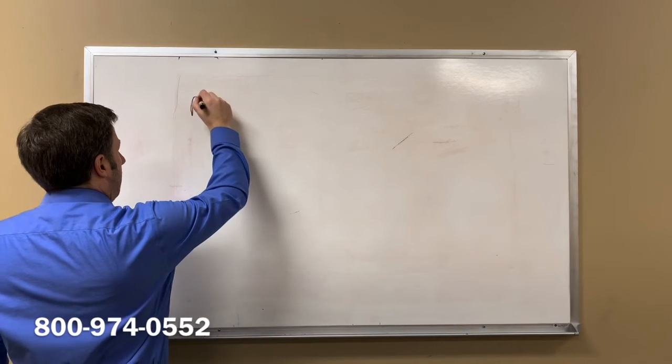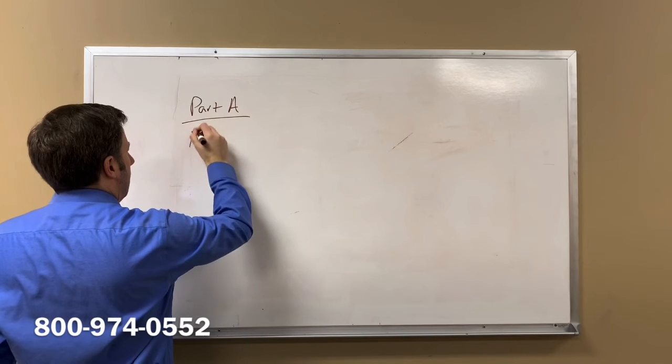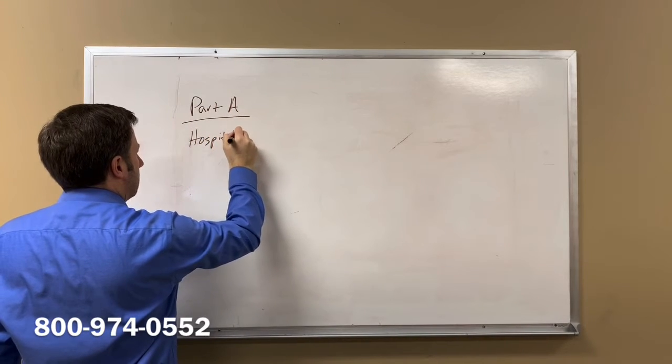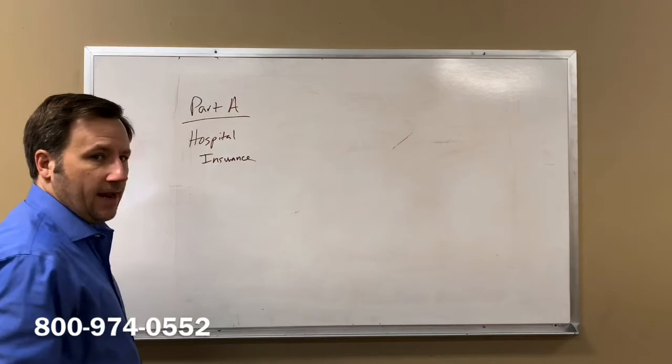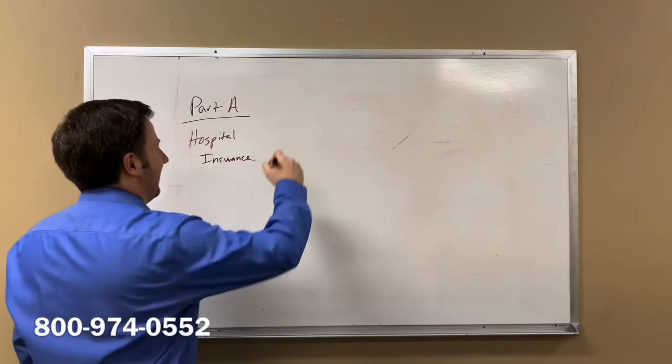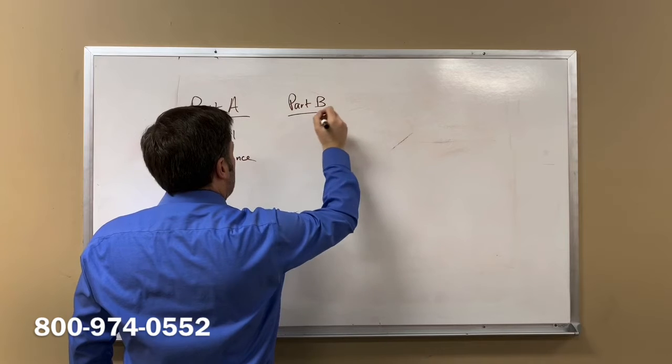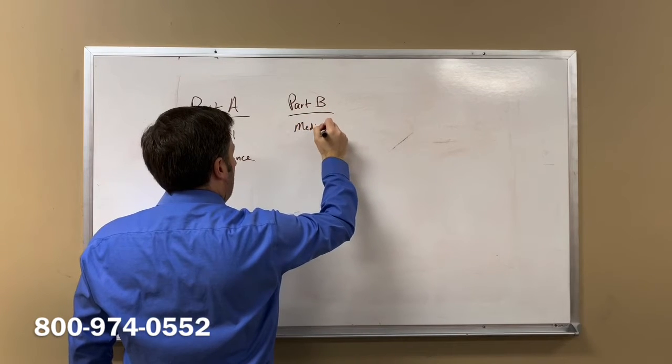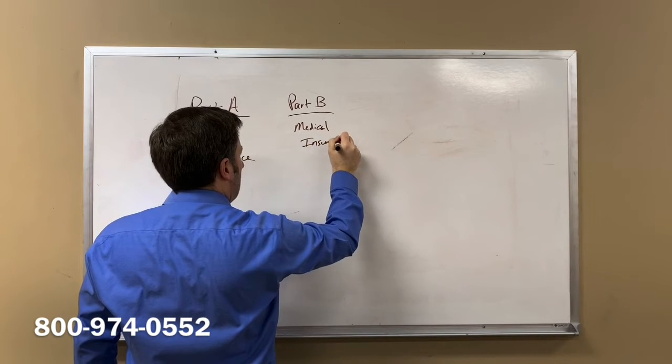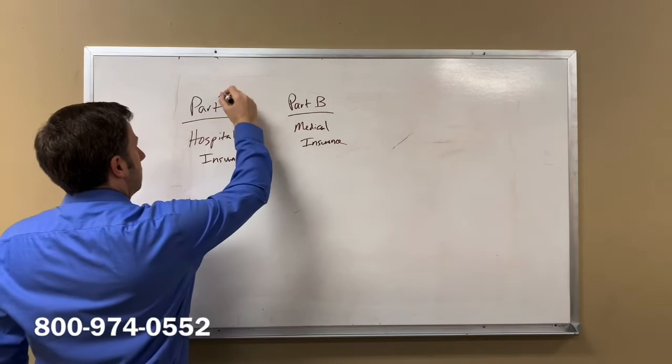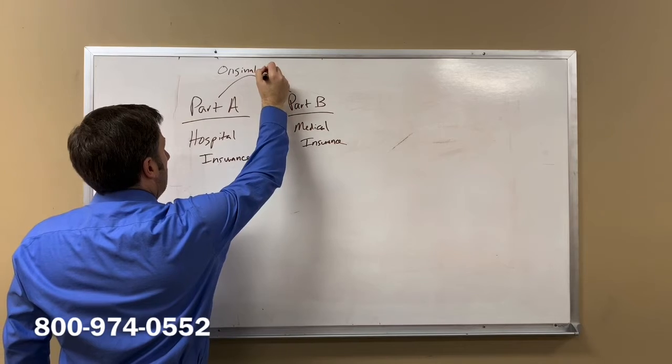So the first part of your Medicare is called Part A and that's known as your hospital insurance. The second part is called Part B and that is your medical or doctor insurance. These two things together are known as Original Medicare.